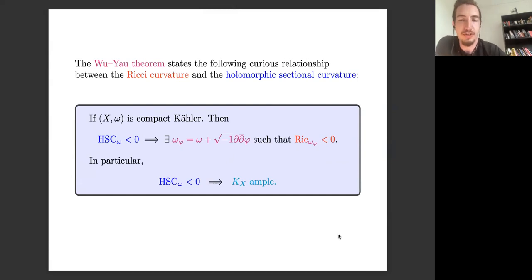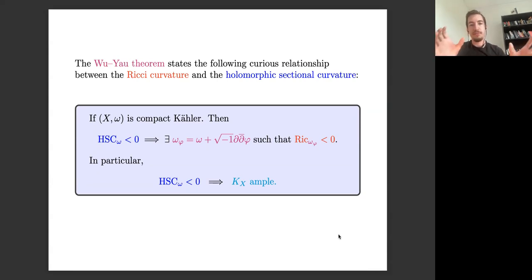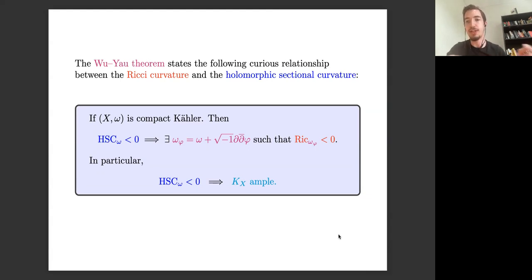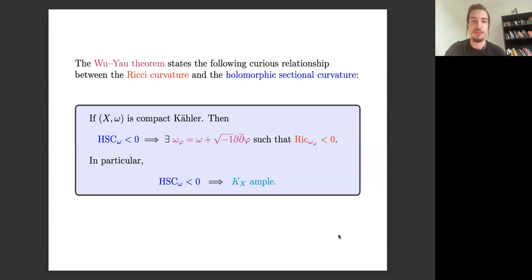The Wu-Yau theorem establishes a very interesting relationship between the Ricci curvature and the holomorphic sectional curvature. Recall that holomorphic sectional and Ricci both control the scalar curvature and are both dominated by the bisectional, but they don't control one another. However, if the holomorphic sectional curvature is negative, then there is a cohomologous metric which has negative Ricci — this is not obvious at all. In the positive case this theorem is false and there are examples with positive holomorphic sectional that don't have positive Ricci.